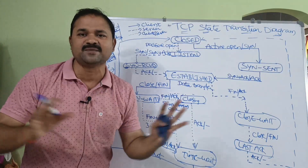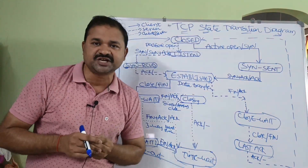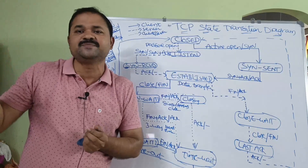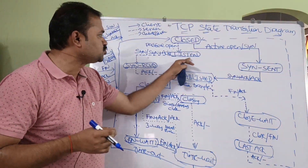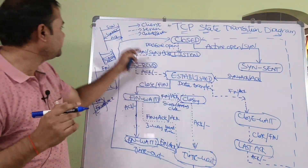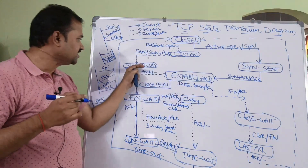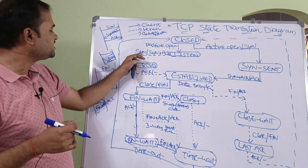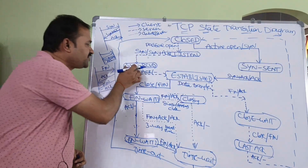Now let us see the server transitions. Initially the server is in the closed state. The server is in passive open because it is expecting a SYN segment from the client. After that it goes to the listen state, where it listens for a SYN segment from the client. The dashed line represents server states. The server receives the SYN segment from the client and provides SYN plus acknowledgement to the client.